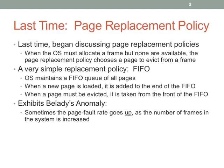FIFO had this characteristic that adding page frames would sometimes cause the page fault rate to go up, which is weird. You can actually design access patterns where, as you increase the number of frames, the fault rate goes up. Our example went from nine faults to ten faults, but you can actually get a huge increase in fault rate by adding frames, which is disturbing. So that was very anomalous.